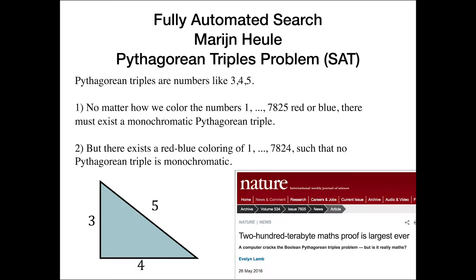And what the theorem produced by the SAT solver says no matter how we color the numbers one up to 7,825, red or blue, there must exist a monochromatic Pythagorean triple. And then going down by one, but there exists a red-blue coloring such that up to 7,824 such that no Pythagorean triple is monochromatic.